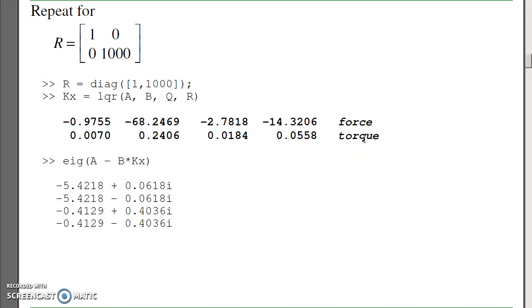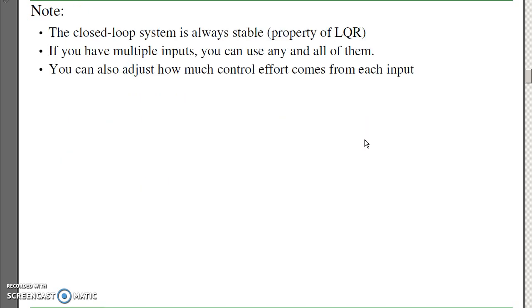So if you have two different inputs, I can control how much of the control effort goes to the first input or second input just by weighting R. I'll notice a couple advantages of LQR methods. The closed-loop system is always stable. That's the property of LQR methods. I'm trying to find the optimal feedback gains. If any set of gains are stabilizing, the optimal set of gains have to be stabilizing. Second advantage, if you have multiple inputs, you can use any of them or all of them, unlike what we had with Bas-Gura. And you can adjust how much control effort goes to each input.